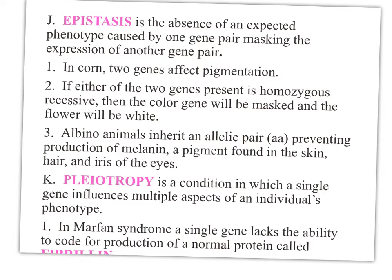Pleiotropy is a condition where one gene influences many different things. One example is Marfan syndrome, where one gene does not allow the body to produce the protein fibrillin. Fibrillin does several things, so because people with Marfan syndrome don't produce it, it affects multiple parts of the body — just like melanin in albinos affects skin, hair, and eyes. One gene affects multiple parts of the body.